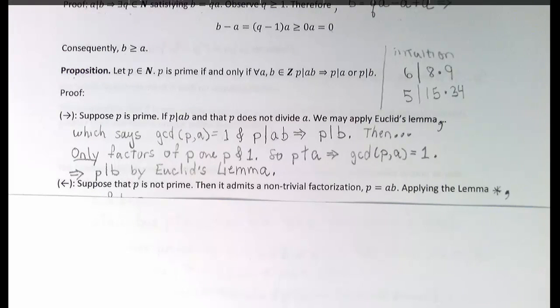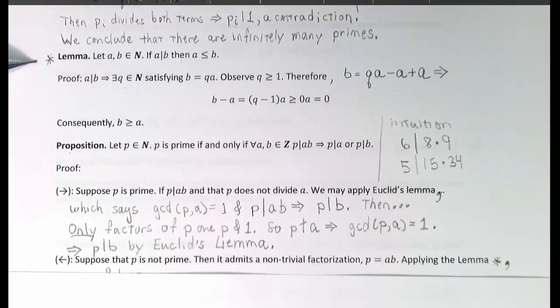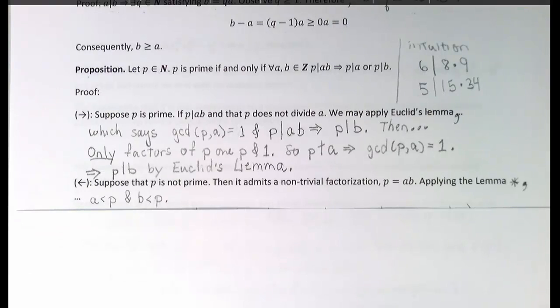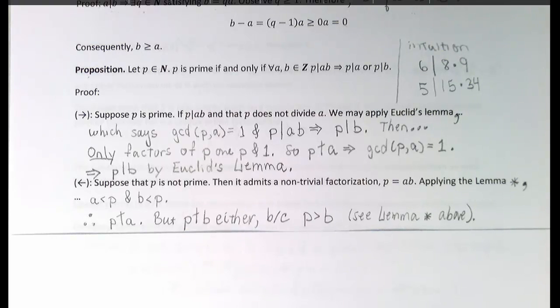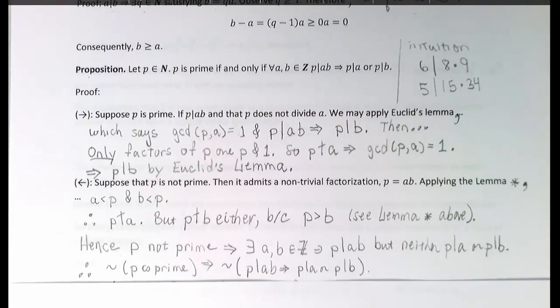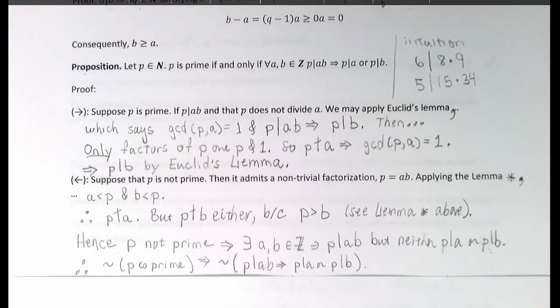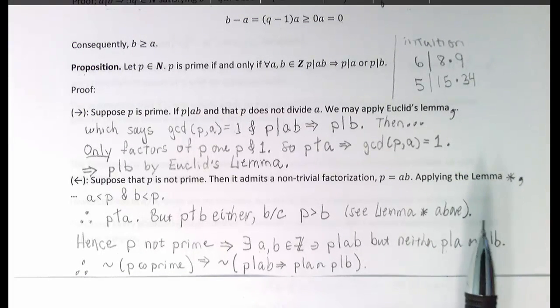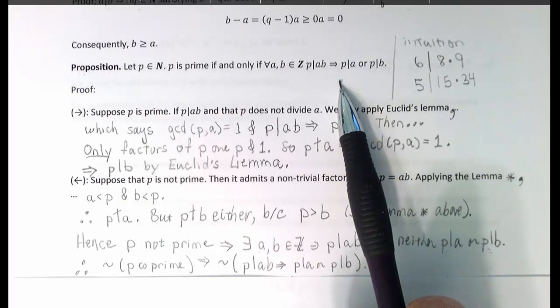Suppose that p is not a prime. Then it admits some non-trivial factorization, let's say p equals a times b. And now we want to keep in mind that both a and b are strictly greater than 1. We can apply the lemma that we just proved and labeled with a star. Since both a and b divide p, it must be the case that a and b are both less than p. Restating then, p cannot divide a, and p cannot divide b either. Consequently, if p is not prime, there are natural numbers greater than 1 satisfying p equals a times b, but neither p divides a nor p divides b. Consequently, if p is not a prime, then the conclusion doesn't hold. We have thus shown that p is a prime if and only if we have the desired property: p divides ab implies p divides a or p divides b.